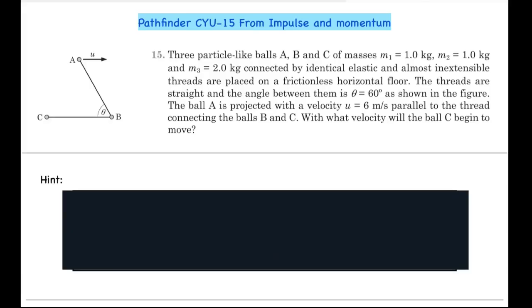Hey guys, here we have question number 15 from check your understanding exercise of the chapter impulse and momentum, from Pathfinder. Let's first look at the question. Three particle-like balls A, B, and C of masses m1 = 1 kg, m2 = 1 kg, and m3 = 2 kg connected by identical elastic and almost inextensible threads.